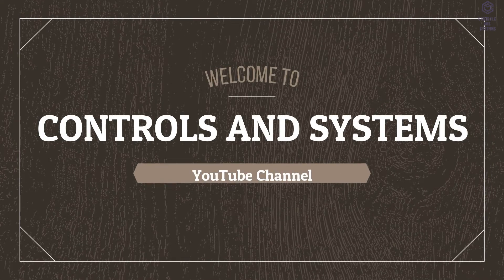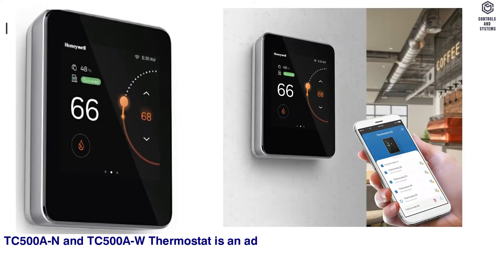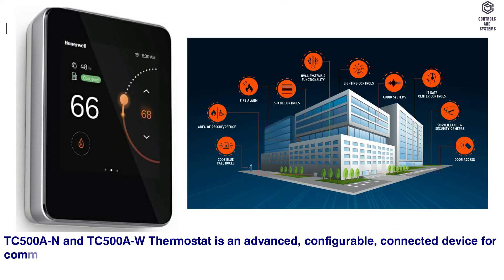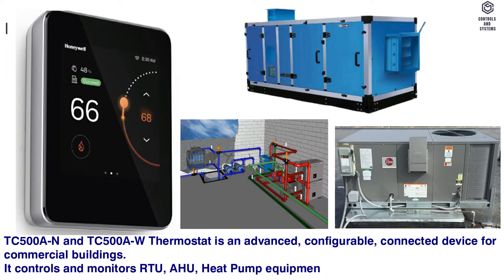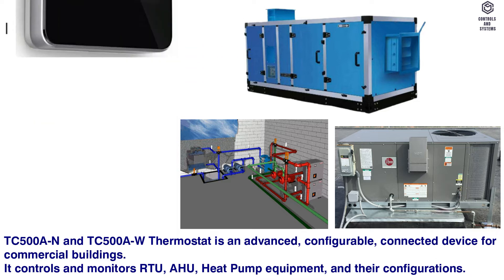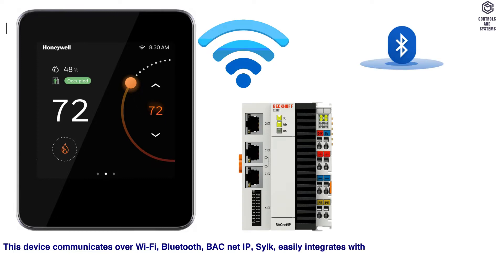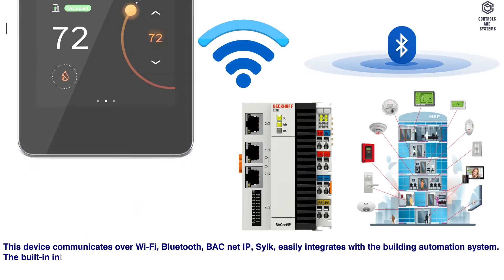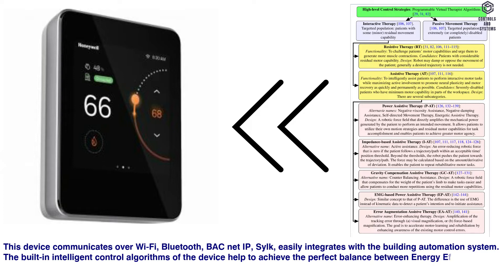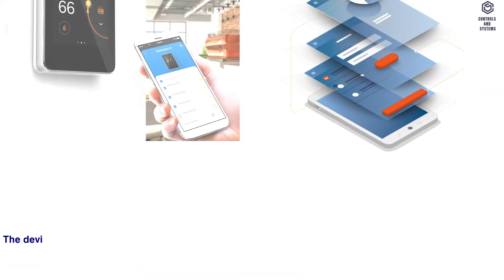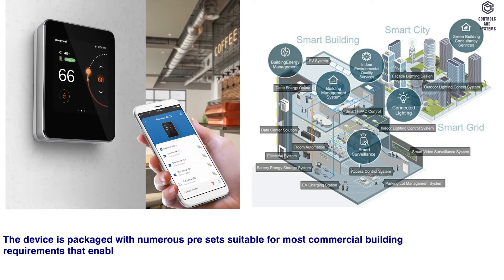The TC500AN and TC500AW thermostat is an advanced, configurable, connected device for commercial buildings. It controls and monitors RTU, AHU, heat pump equipment, and their configurations. This device communicates over Wi-Fi, Bluetooth, BACnet IP, and SILC, and easily integrates with the building automation system. The built-in intelligent control algorithms help to achieve the perfect balance between energy efficiency and comfort. The device is packaged with numerous presets suitable for most commercial building requirements that enable easy and quick initial setup.